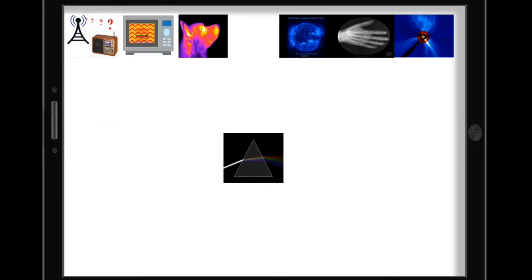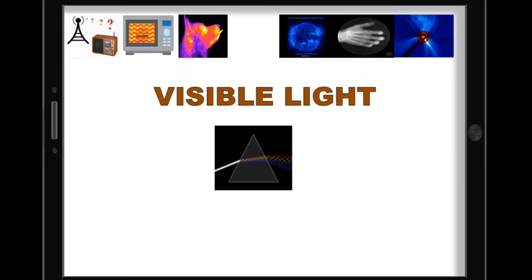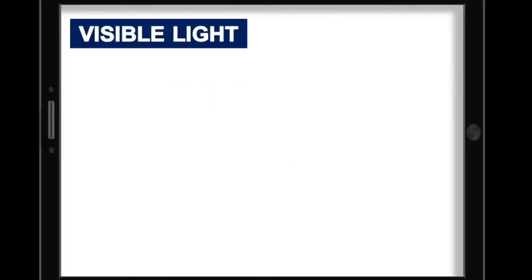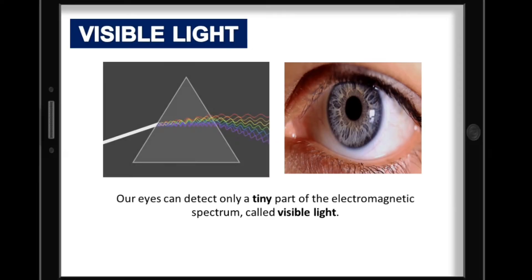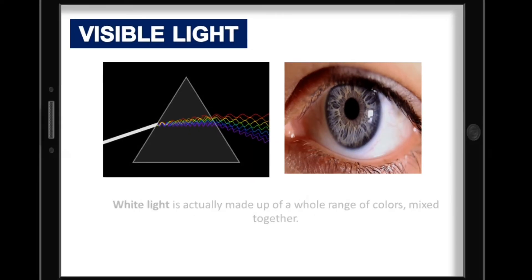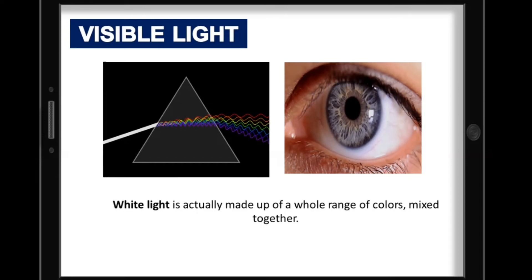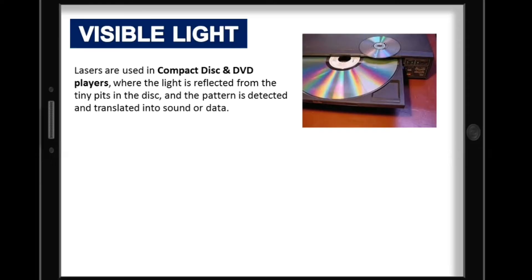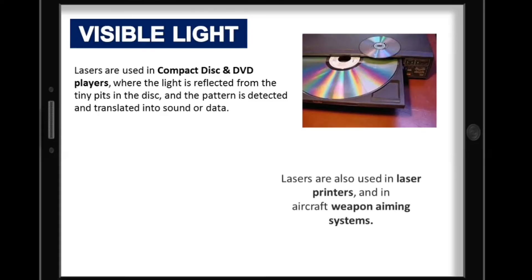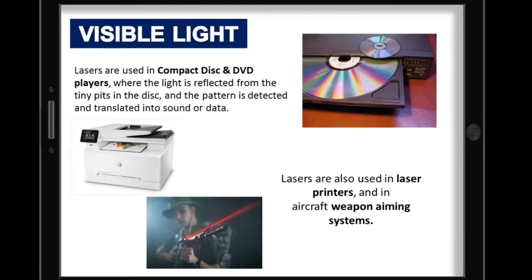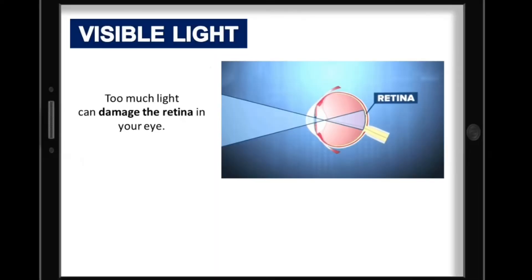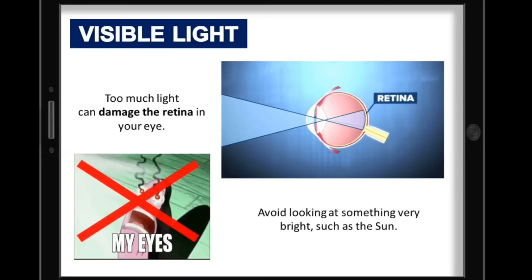The only type of EM wave that can be seen by human eyes is visible light, or white light. Our eyes can detect only this tiny part of the electromagnetic spectrum. White light is actually made up of a whole range of colors mixed together. Light waves can also be made using a laser — lasers are used in CD and DVD players, laser printers, and aircraft weapon aiming systems. However, too much light can damage the retina in your eye, so avoid looking at very bright sources such as the sun, as the damage can be permanent.